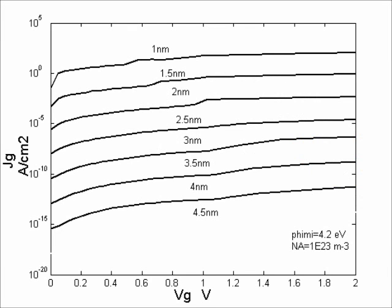In this graph, we can see how leakage current density relates to gate voltage and oxide thickness. The current seems to mostly level off after exceeding some threshold voltage. Where the significant change comes in is how thick the oxide is, where we can see the results of the equation P shown previously. Here current density decreases exponentially with increasing oxide thickness.